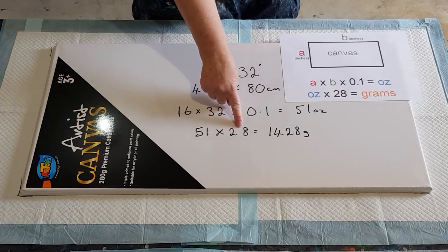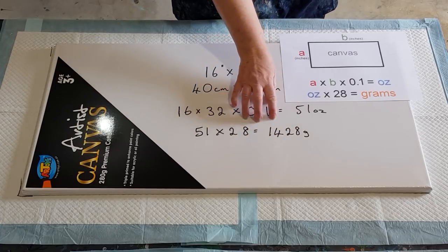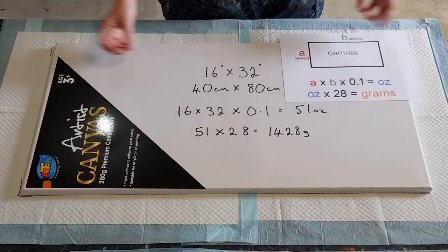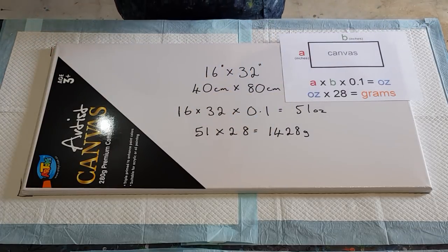So converting that to grams, 51 times 28 gives you 1428. Now I found I do need a little bit more as the canvases get bigger, I tend to do a little bit more. So I would round that up to 1500 grams of paint.